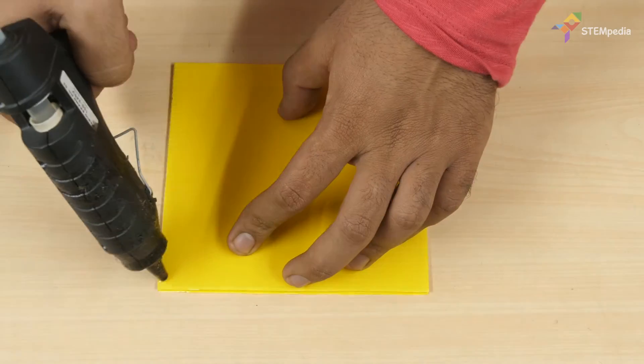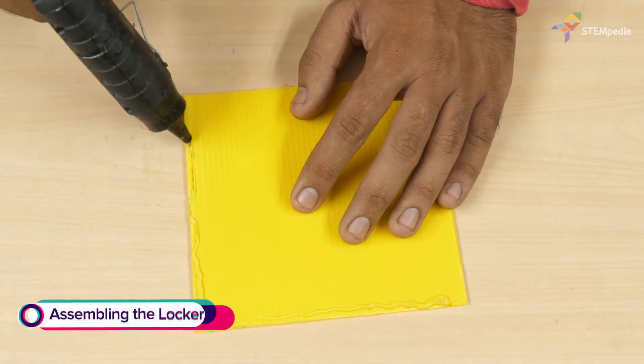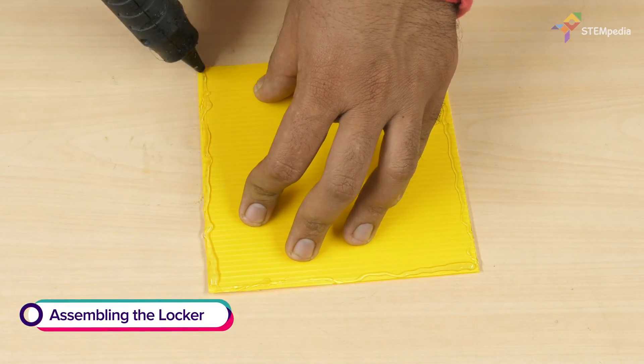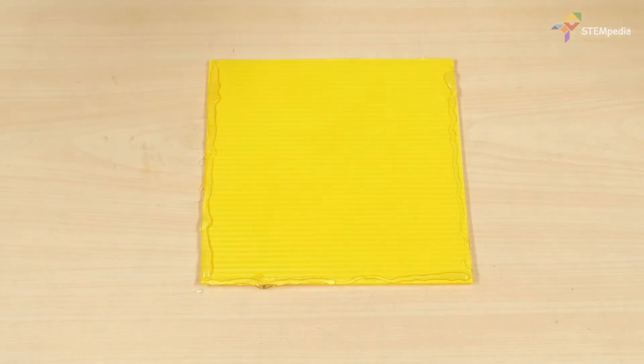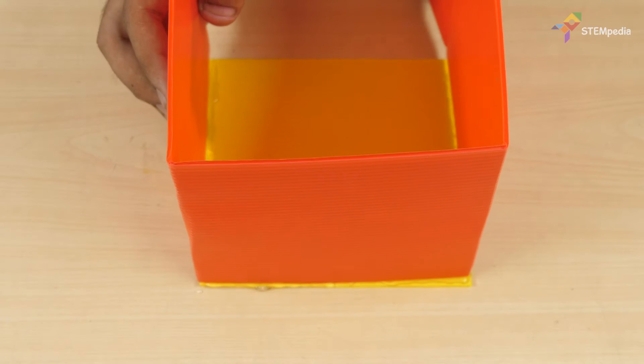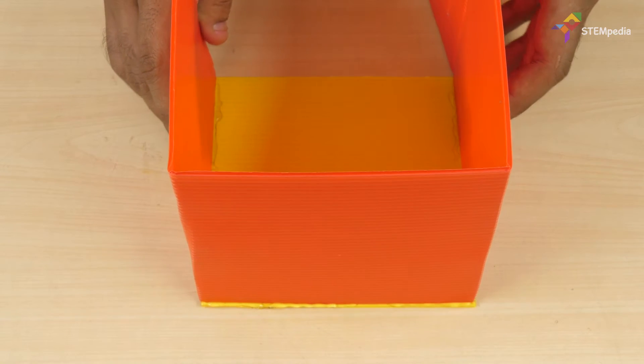Now let's assemble the locker. Take the first half of the 30x15cm yellow corrugated sheet and paste three of the side walls of the locker perpendicular to it using hot glue.